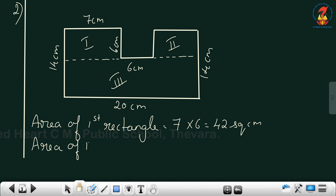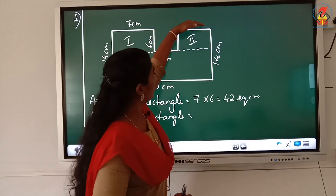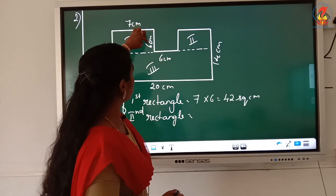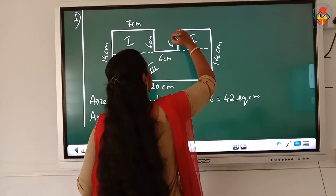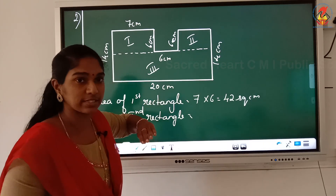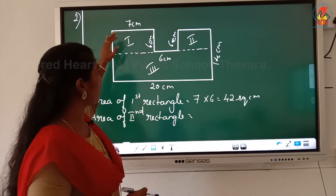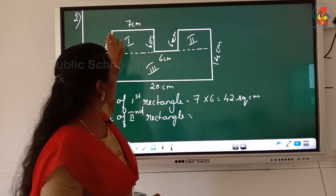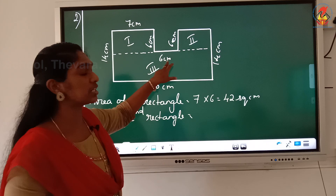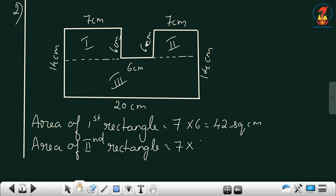Next, area of the second rectangle. Here we have to find out what will be the length and the breadth. This one is similar to the first one, so the breadth is 6. Now you have to find out the length. From here till here it is 20 centimeter. Then from here to here it is 7, and from here to here it is 6. So 7 plus 6 is 13 centimeter. The total length is 20, so 20 minus 13 gives you 7 centimeter. So length into breadth is 7 into 6, again 42 square centimeter.